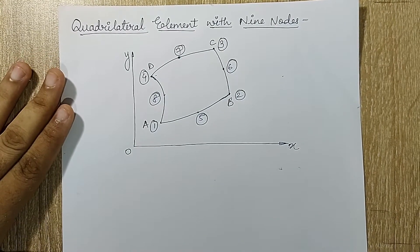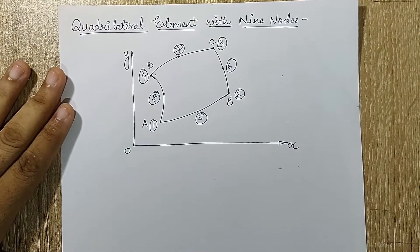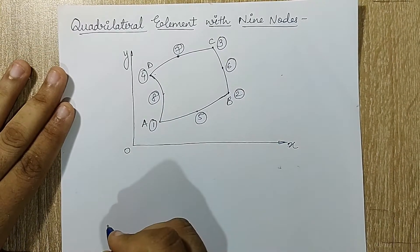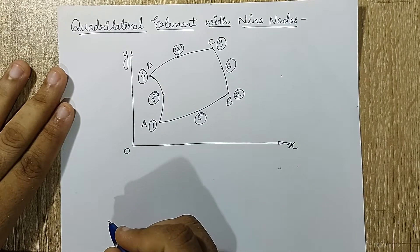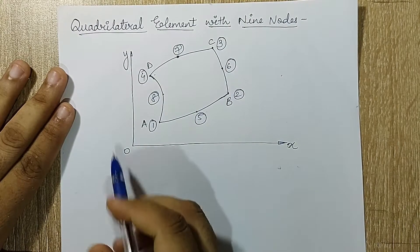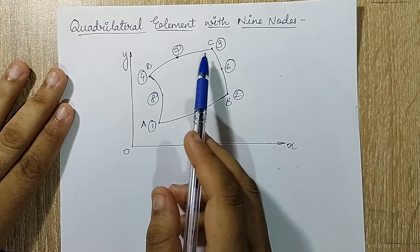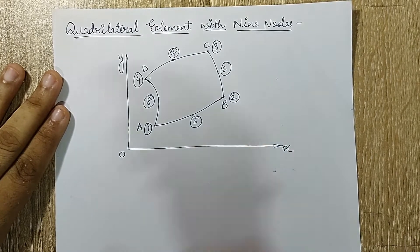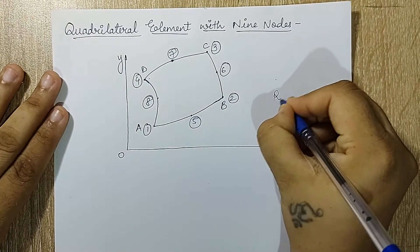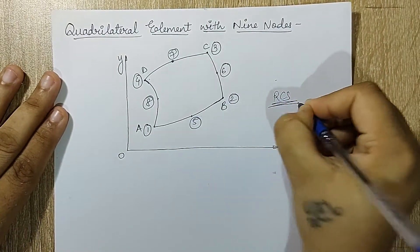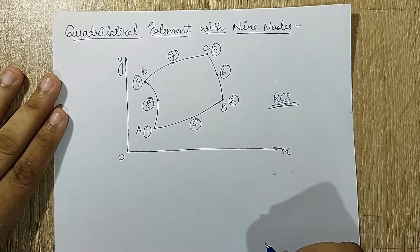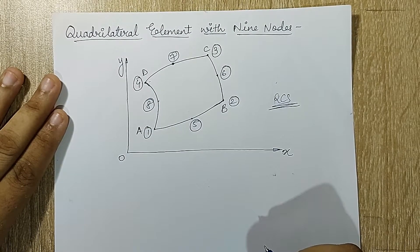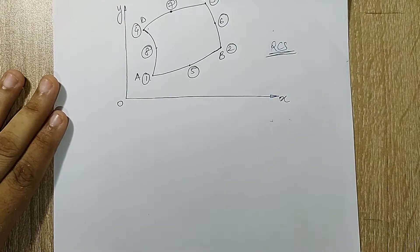Hello everyone, welcome to the next session of finite element analysis. In this session I am going to solve a derivation of quadrilateral element with nine nodes. This is the quadrilateral given in rectangular coordinate system, and I will be transforming this into natural coordinate system and then solving it.